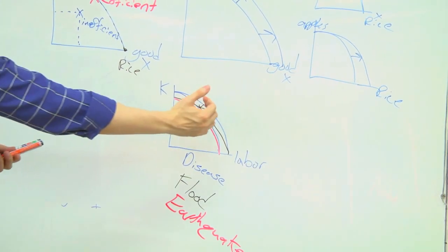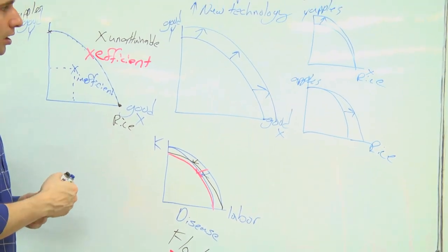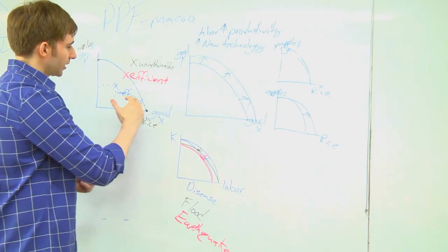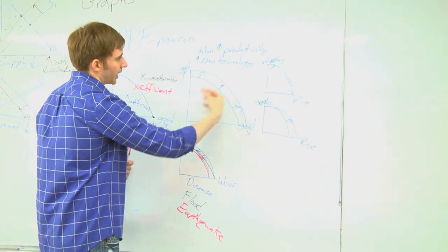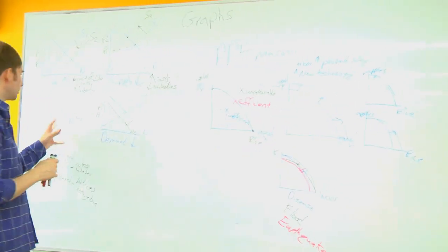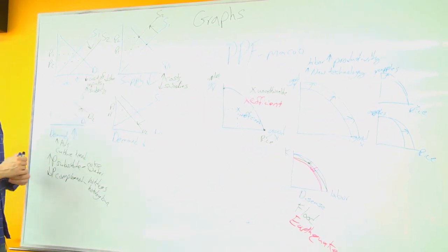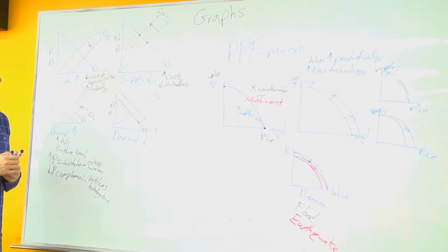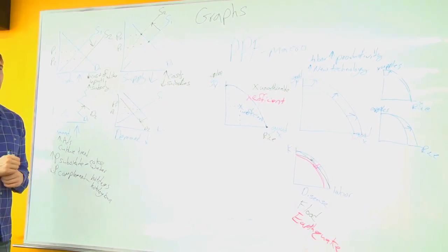So this is our production possibility frontier. It represents what our economy can produce. And we looked at shifting it inward and outward. And then again, we looked at just a normal supply and demand for our micro skills. So that's our graphs and that's how we shift our lines and the conditions.